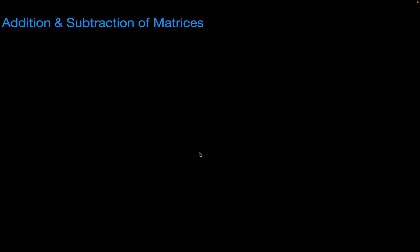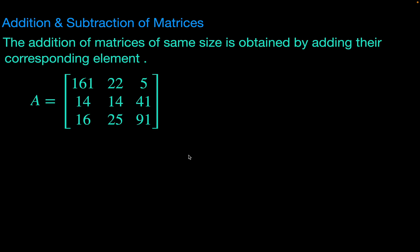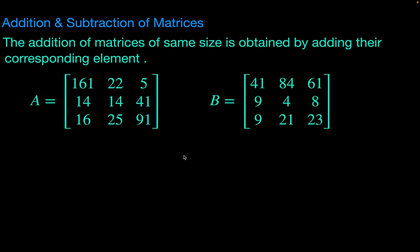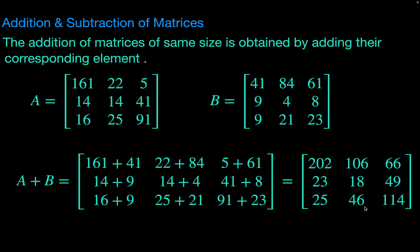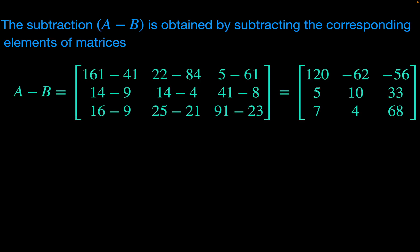Now let's understand the addition and subtraction of matrices. The addition of matrices of the same size is obtained by adding their corresponding elements. For example, matrix A and matrix B are both 3×3 matrices. Adding A and B gives a 3×3 matrix with terms obtained by adding the corresponding terms of matrix A and matrix B.